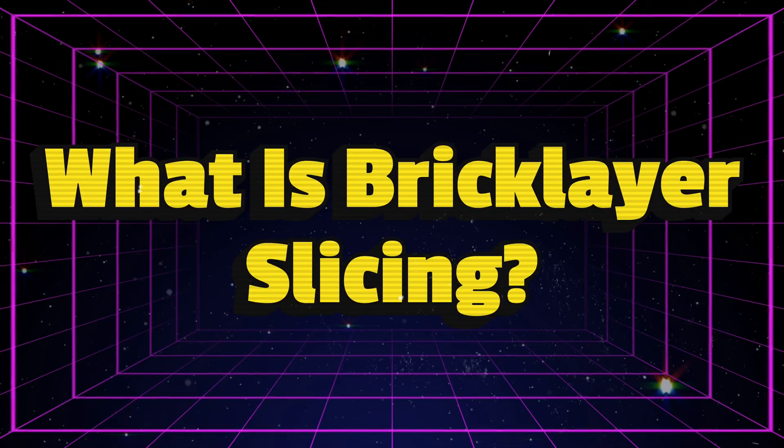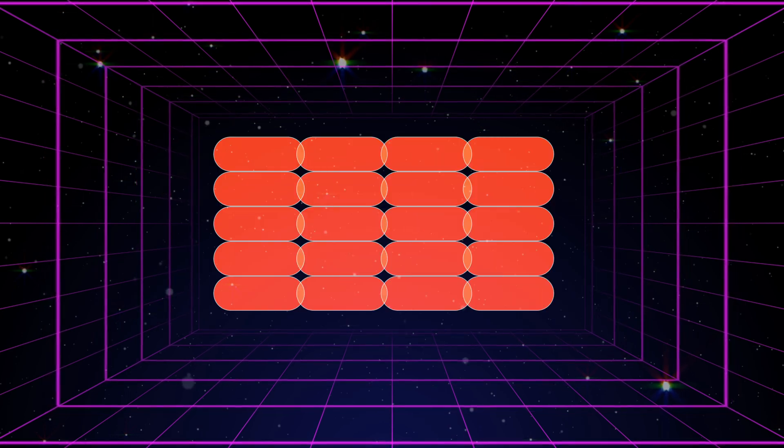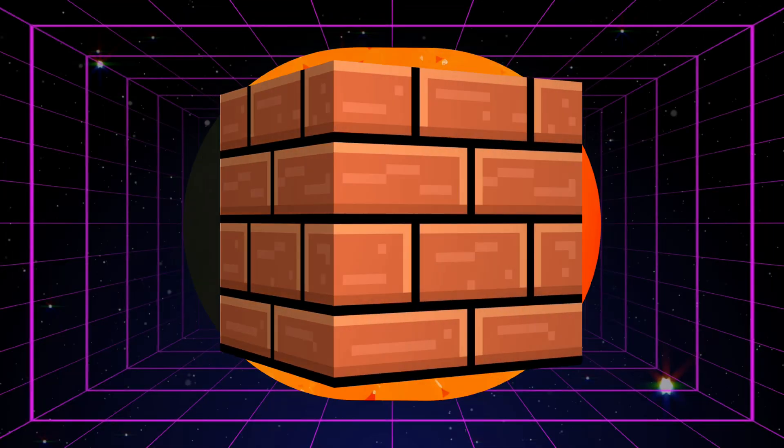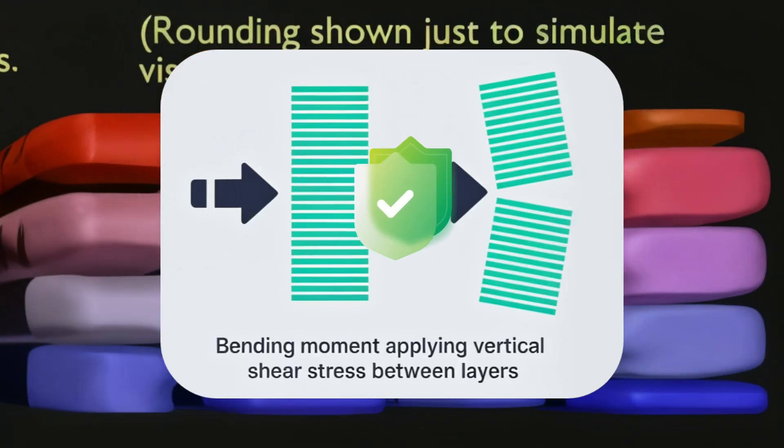What is brick layer slicing? It's called staggered perimeters. Instead of stacking layers perfectly aligned, each one shifts slightly, like bricks in a wall. The result? Layers that interlock, and parts that resist snapping along the Z-axis.